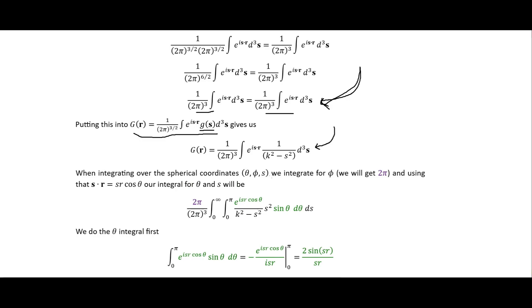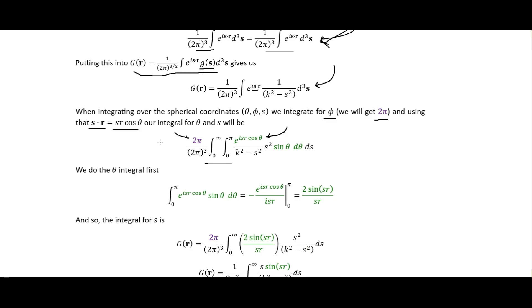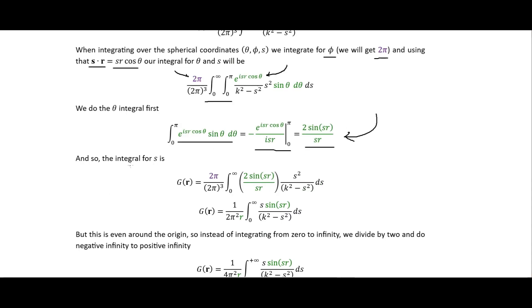We integrate over spherical coordinates. First, we integrate over phi — by circular symmetry, this just gives a factor of 2π. Then we use the identity that S·R = S R cos θ and substitute that into the exponential. We then perform the theta integral, evaluate it at the limits π and 0, and obtain an intermediate result, leaving only the radial integral over S to do.